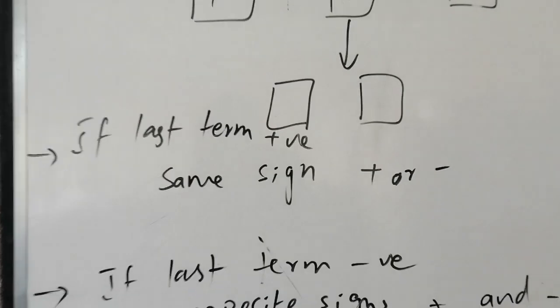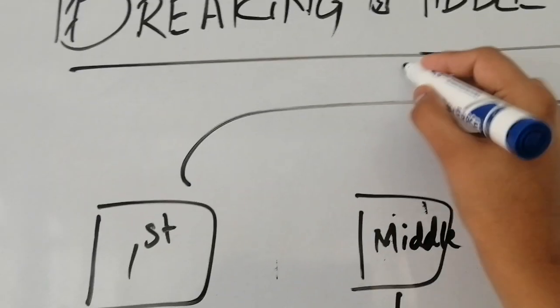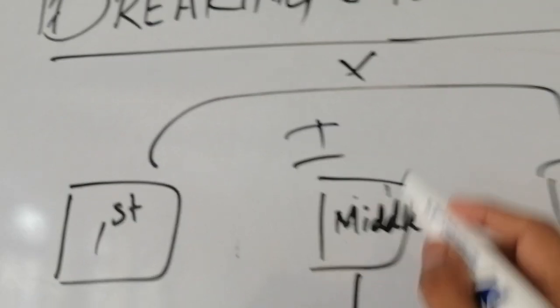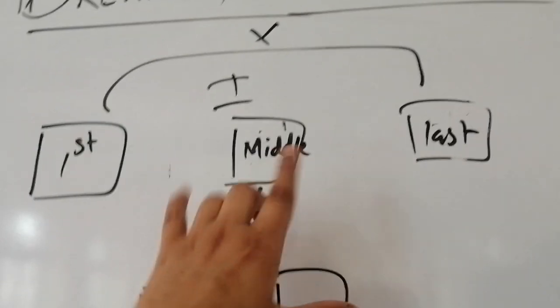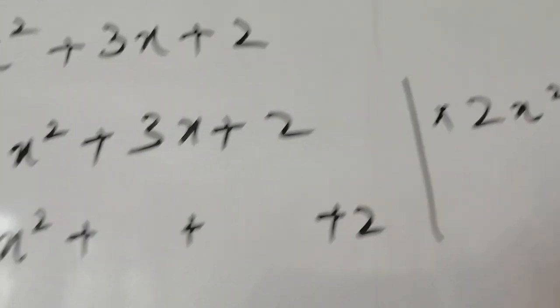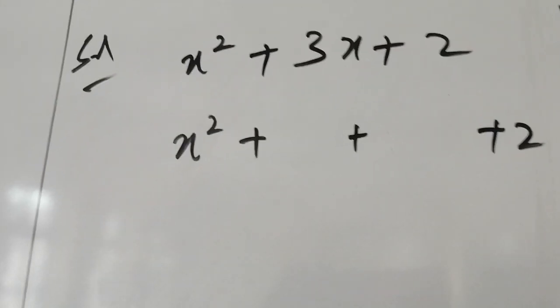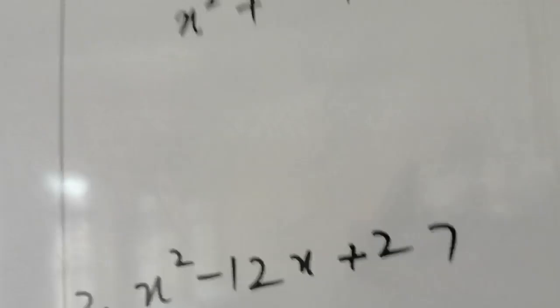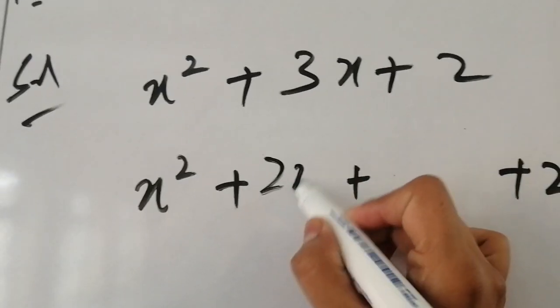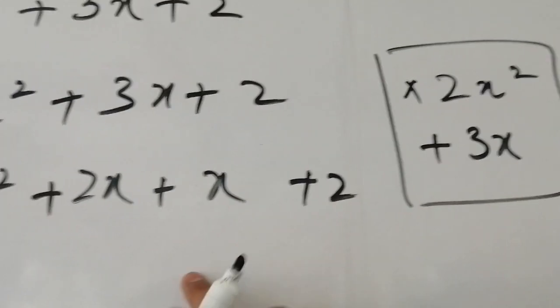We need to break the middle term. We multiply the first and last terms: 1 × 2 = 2x². Then we find two numbers that multiply to 2x² and add to 3x. If we consider 2x and x: multiplying 2x × x gives 2x², and adding 2x + x gives 3x. So we break 3x into 2x and x.